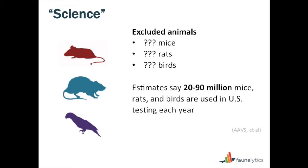The bad news is that most of that decline has shifted to animals not covered under the Animal Welfare Act. We have no good idea of how many mice, rats, and birds are actually used in research because there's no oversight and no requirement to track them — because those lives apparently do not matter very much. So we have a very broad range of 20 to 90 million, compiled from major anti-vivisection organizations. When you add in dissection numbers and AWA-covered animals, you get up to about 100 million animals used in research in the U.S. each year.